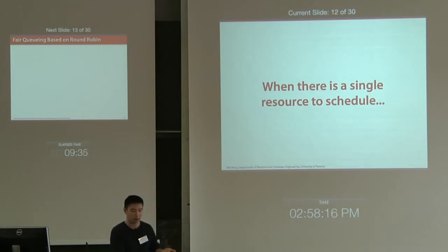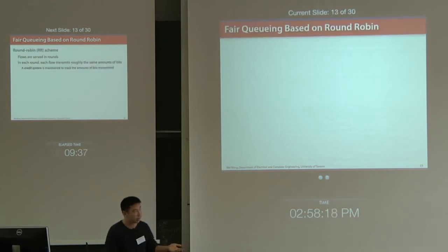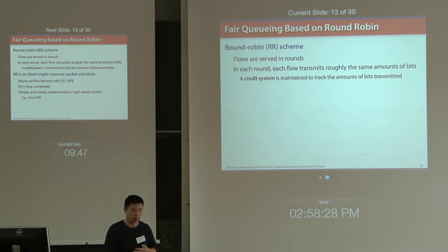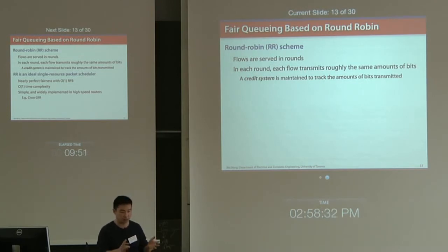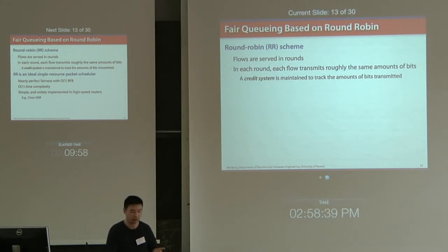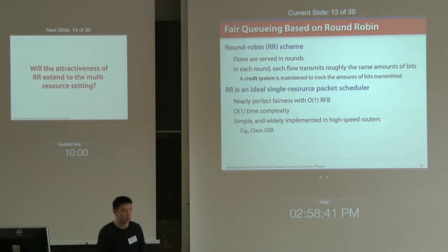When we only have a single resource, we have a fair scheduling algorithm based on round-robin. The round-robin algorithm serves flows in rounds, and in each round each traffic flow transmits roughly the same number of bits. You can use a credit system to track the amount of bits transmitted. Round-robin is an ideal single-resource algorithm: it's very fair, low complexity, and has been widely implemented in high-speed routers like the Cisco GSR.